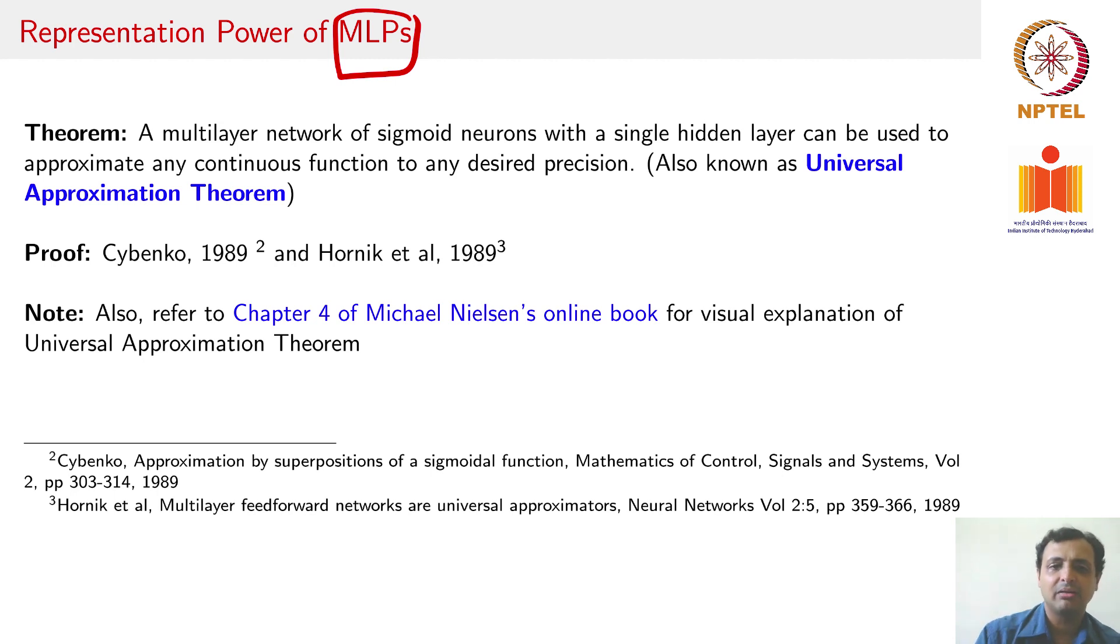A very well studied, very well cited theorem is known as the universal approximation theorem which states that a multilayer network of sigmoid neurons with a single hidden layer can be used to approximate any continuous function to any desired precision. This is a fairly strong statement. We are saying that if you give any continuous function we can use a simple multilayer perceptron with sigmoid neurons and one hidden layer to approximate that continuous function. We are not going to formally prove it here. If you are interested, these papers cited here are good pointers to the proof. There is also a very nice visual explanation of the universal approximation theorem in chapter 4 of Michael Nielsen's online book on neural networks and deep learning.